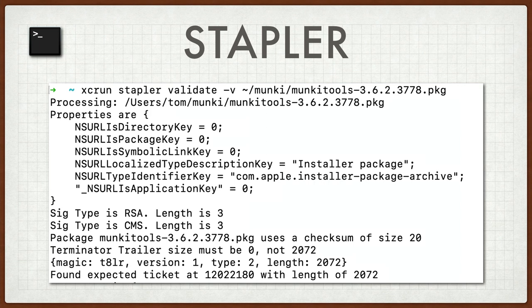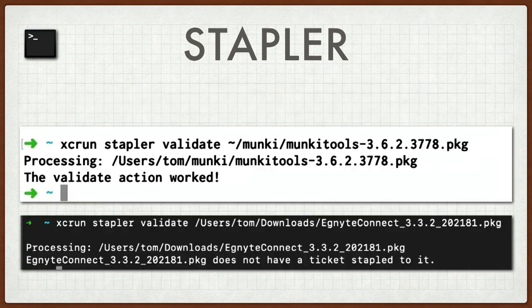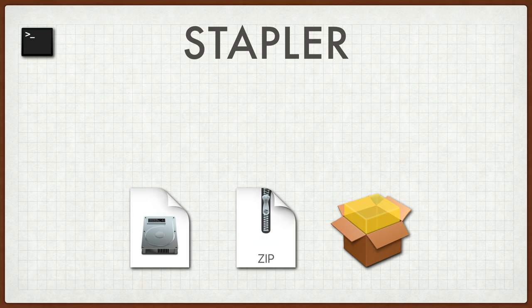This works on any machine that has Xcode installed. You don't need to be running 10.14.5 or later. You can actually take a look at what the actual binaries are doing. Take a look at your stuff. If you have concerns about a package that's maybe internally generated and you're not sure if the developer is notarizing it internally, this is a great way to inspect for that. Stapler is expecting one of three formats: a disk image, a zip file, or a package file. Those are the three kinds of files that Stapler can talk to. It can't talk to anything else.